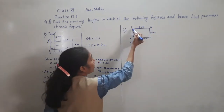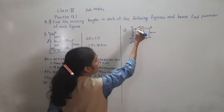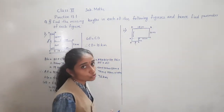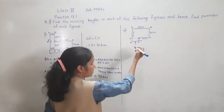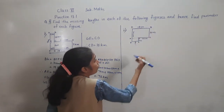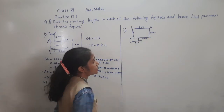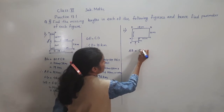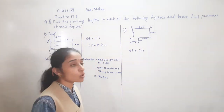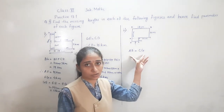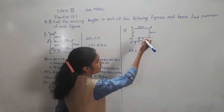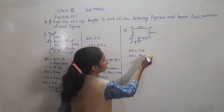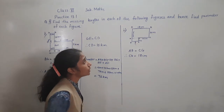ABCG is a rectangle. AB is 18 cm, so CG is also 18 cm. AB is equal to CG — opposite sides of rectangles are equal. Therefore CG = 18 cm.